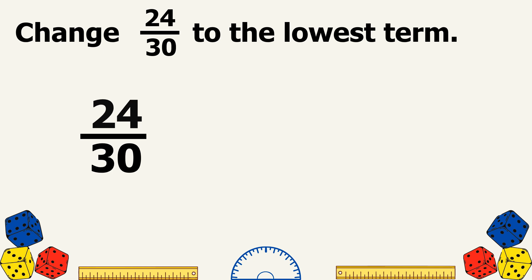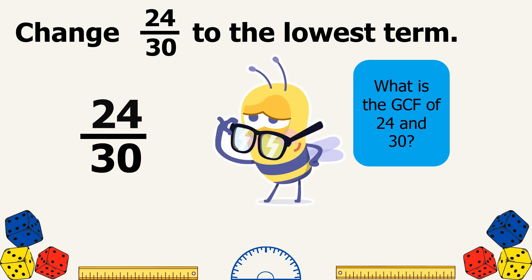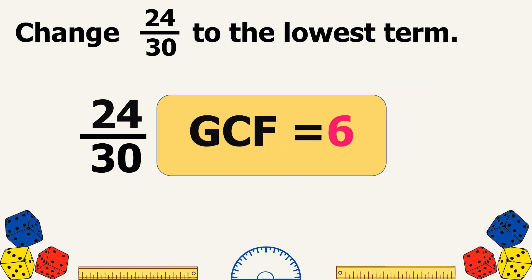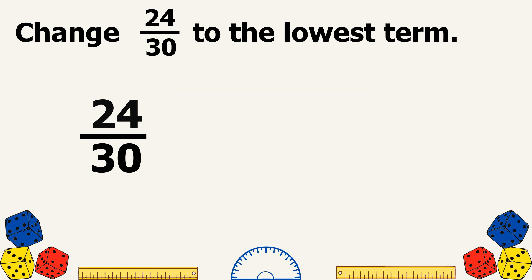Another example: change 24 over 30 to the lowest term. We will use the GCF to simplify directly the given fraction to its lowest term. So what is the GCF of 24 and 30? The GCF of 24 and 30 is 6.